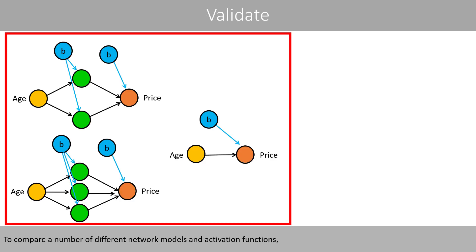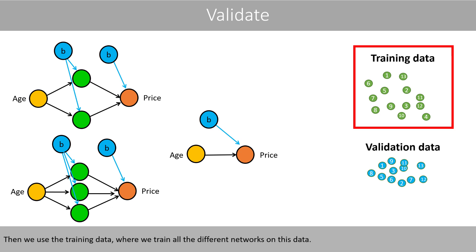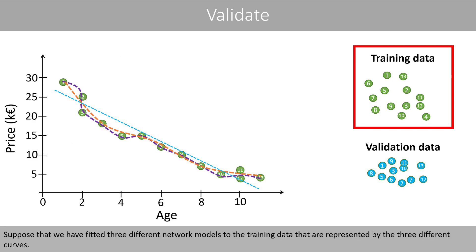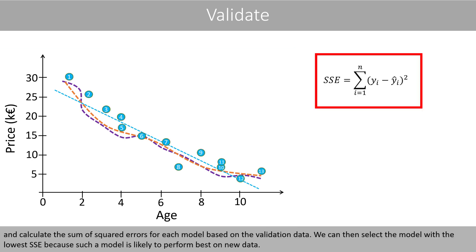To compare a number of different network models and activation functions, we could collect a dataset and split it into a training dataset and a validation dataset. Then we use the training data to train all the different networks. Suppose that we have fitted three different network models to the training data, represented by three different curves. Then we remove the training data and plug in the validation data and calculate the sum of squared errors for each model. We can then select the model with the lowest sum of squared errors, because such a model is likely to perform best on new data.